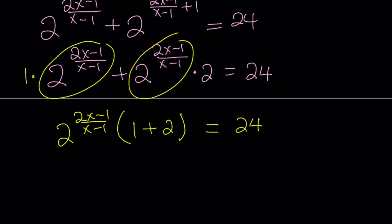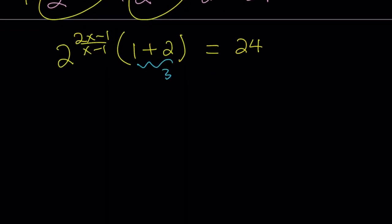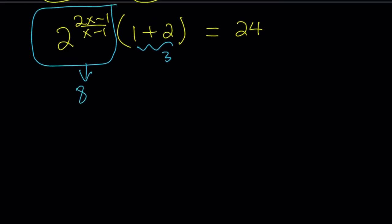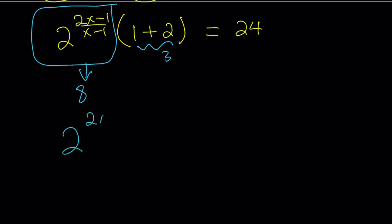We have a product, 1 plus 2 is equal to 3. So now we can go ahead and replace it with 3. And notice that what number times 3 equals 24? The answer is 8. So this must be 8. Okay. So let's go ahead and write a new equation with that. 2 to the power of 2x minus 1 over x minus 1 equals 8. And 8 is just 2 to the third power. So we can write the 8 as 2 to the third power.